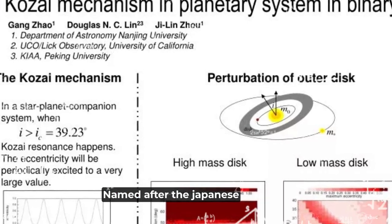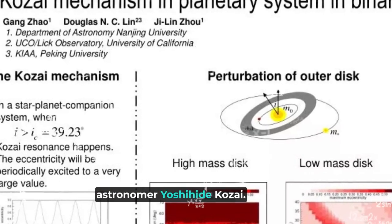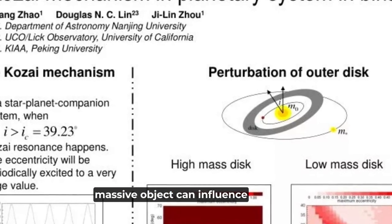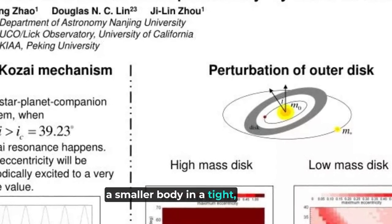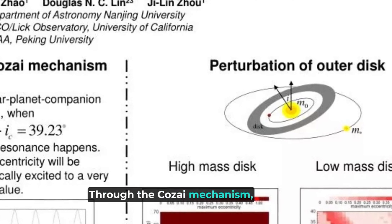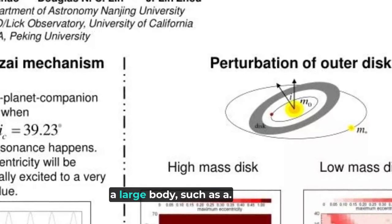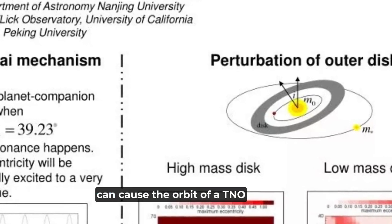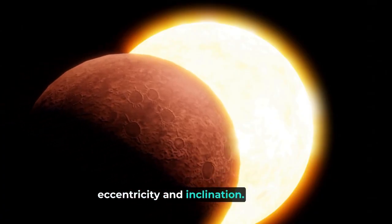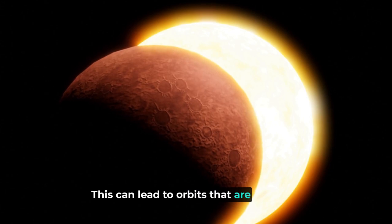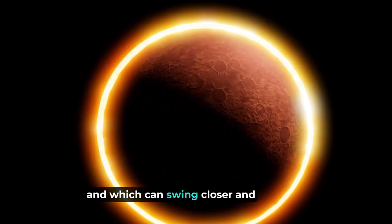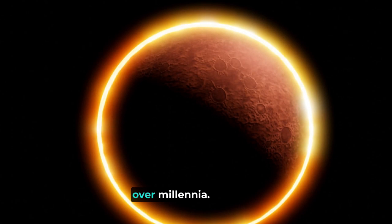The answer lies partly in a phenomenon known as the Kozai Mechanism. Named after the Japanese astronomer Yoshihide Kozai, this mechanism describes how a distant, massive object can influence a smaller body in a tight, inclined orbit around a central star. Through the Kozai Mechanism, the gravitational pull from a large body, such as a hidden planet, can cause the orbit of a TNO to periodically increase in eccentricity and inclination. This can lead to orbits that are sharply tilted relative to the plane of the solar system and which can swing closer and further from the sun over millennia.